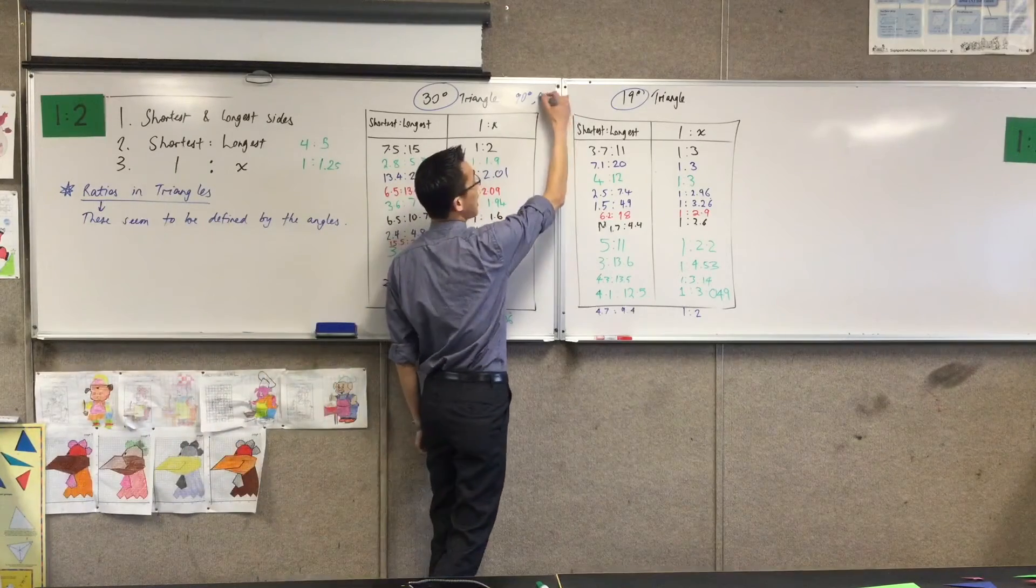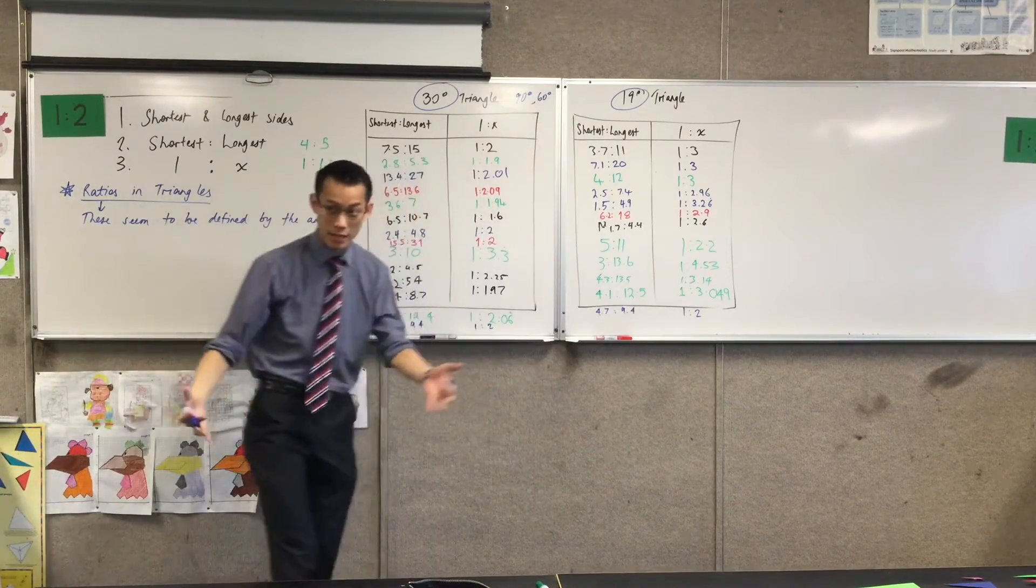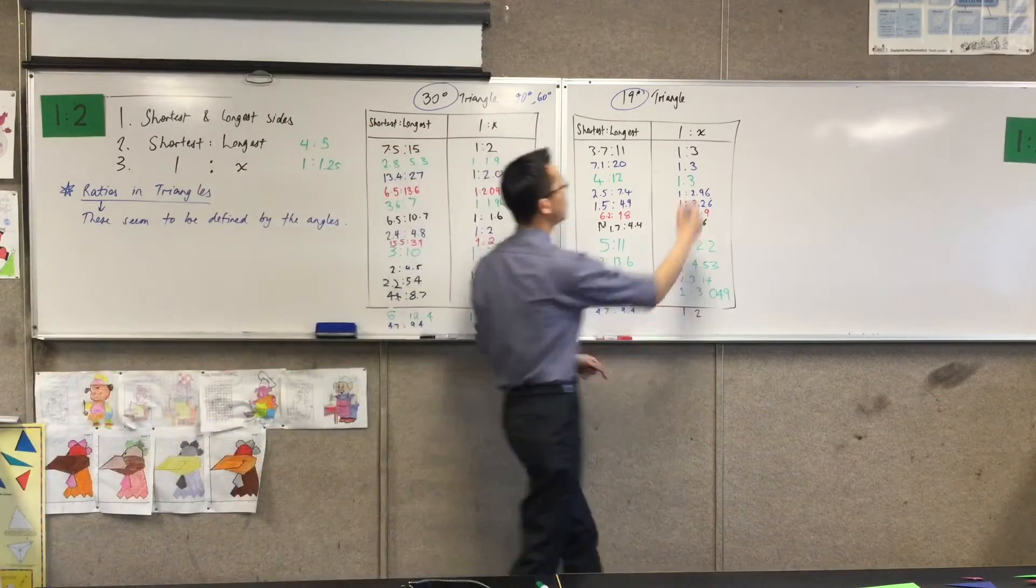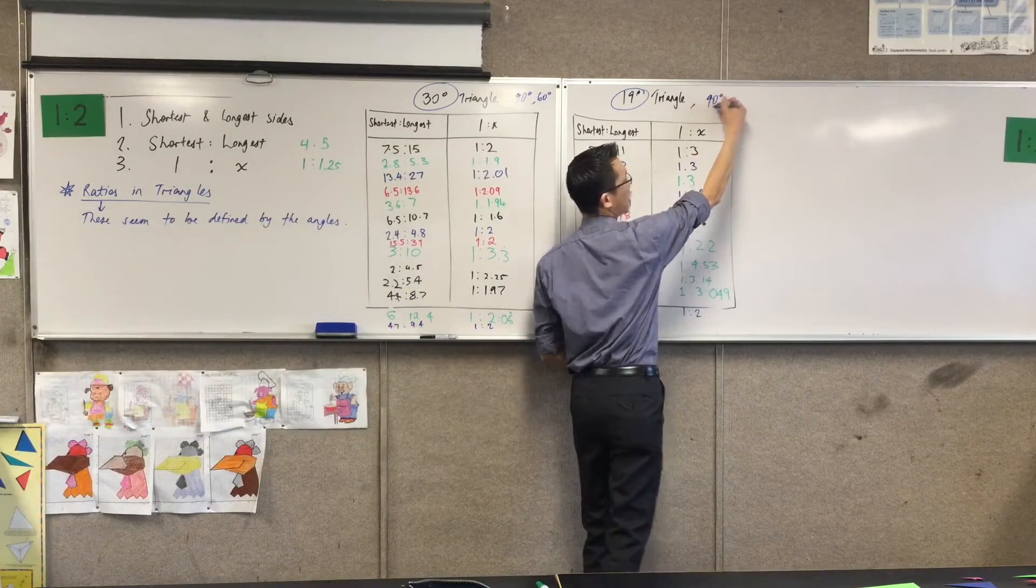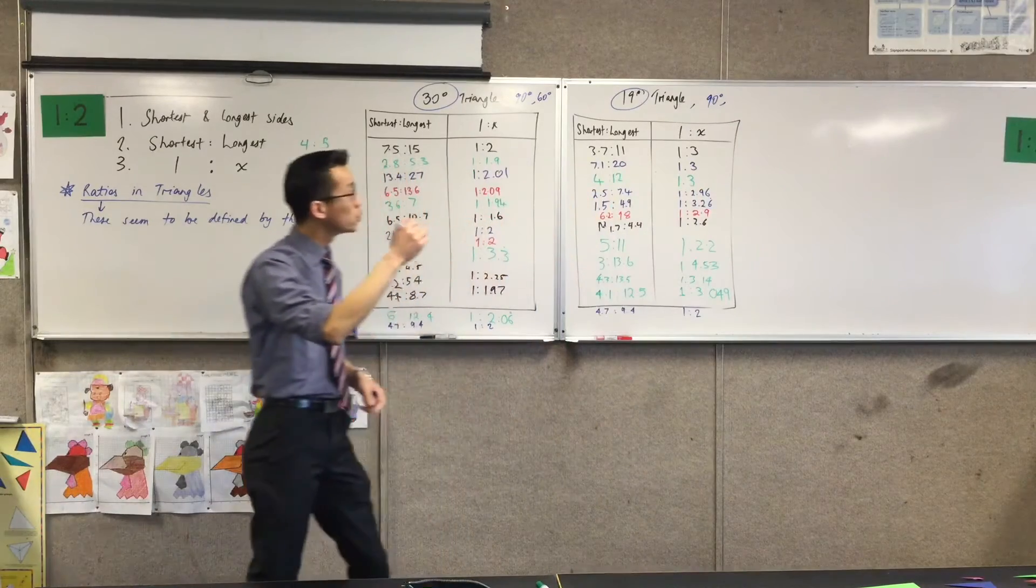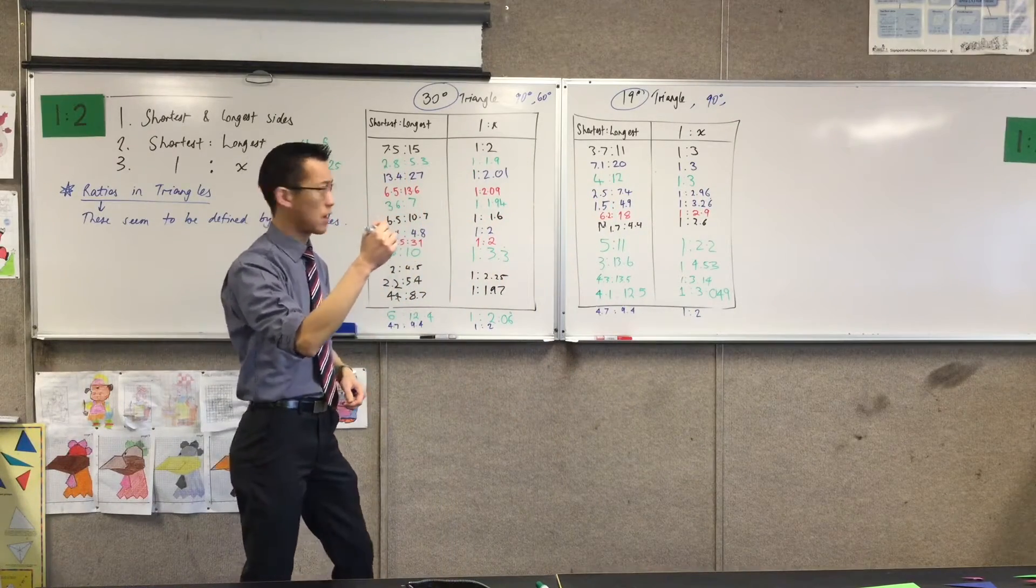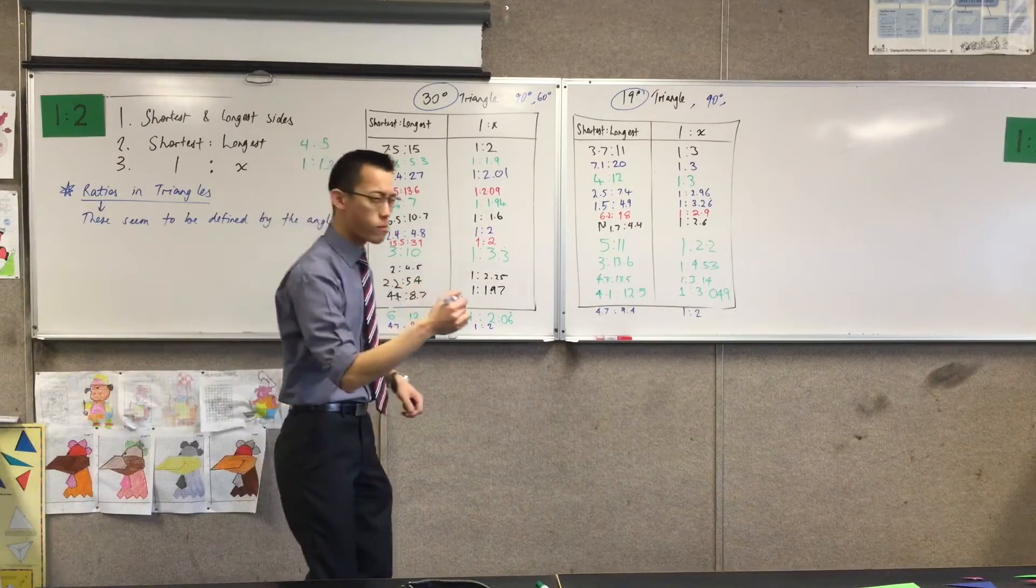It has to be 60 because the angle sum of the triangle is 180 degrees. And you can replay the same thing over here for this triangle. Again, I told you to make it right-angled, which makes the final angle 71.